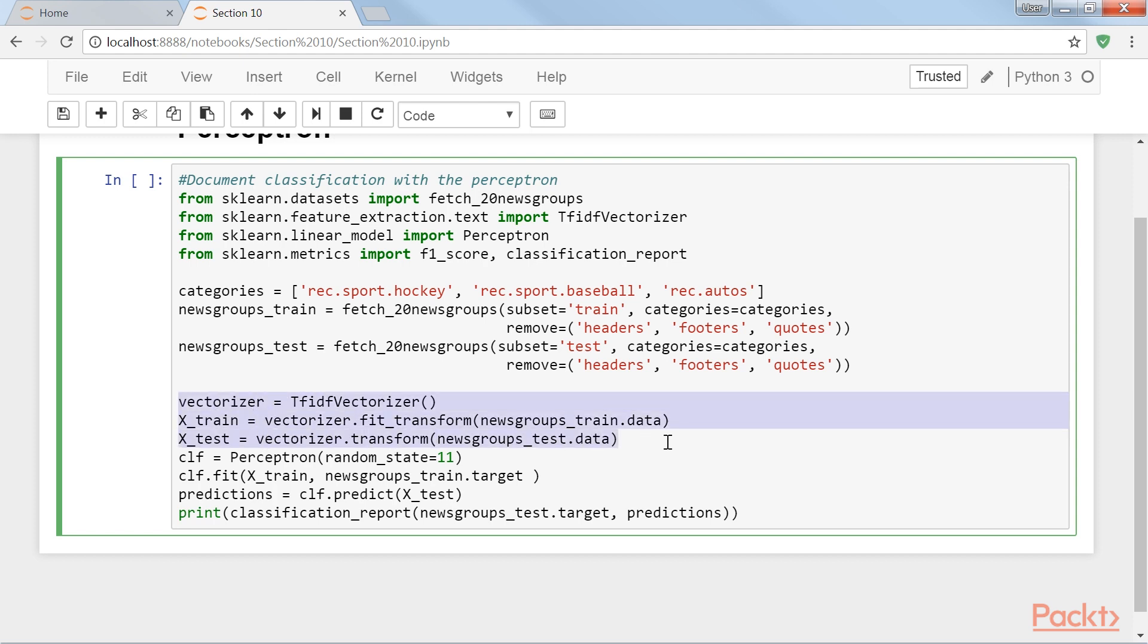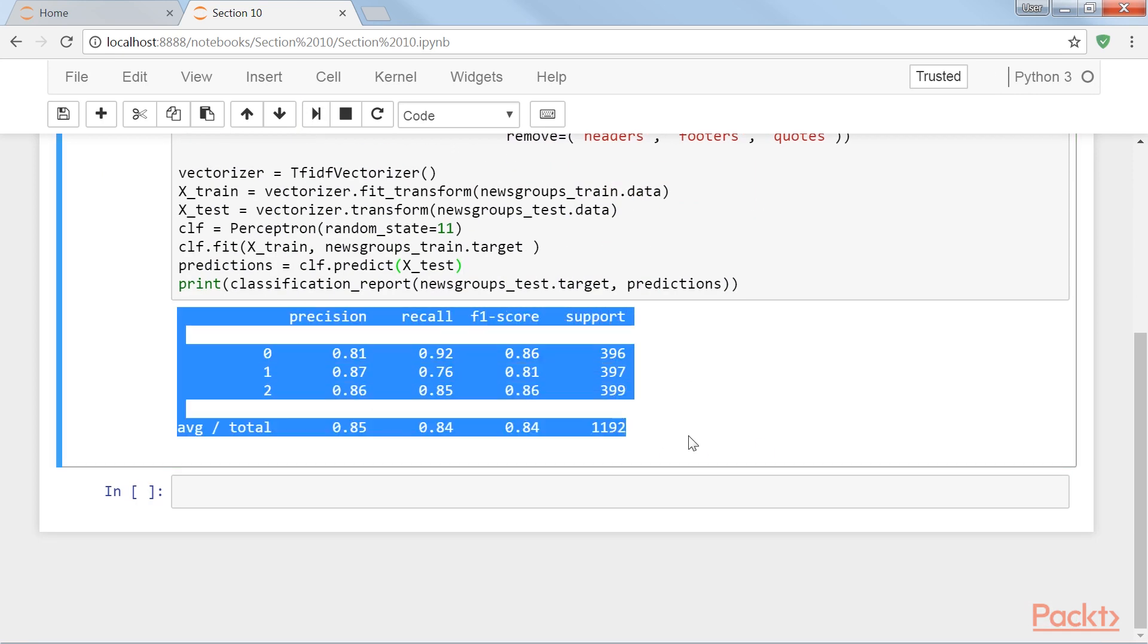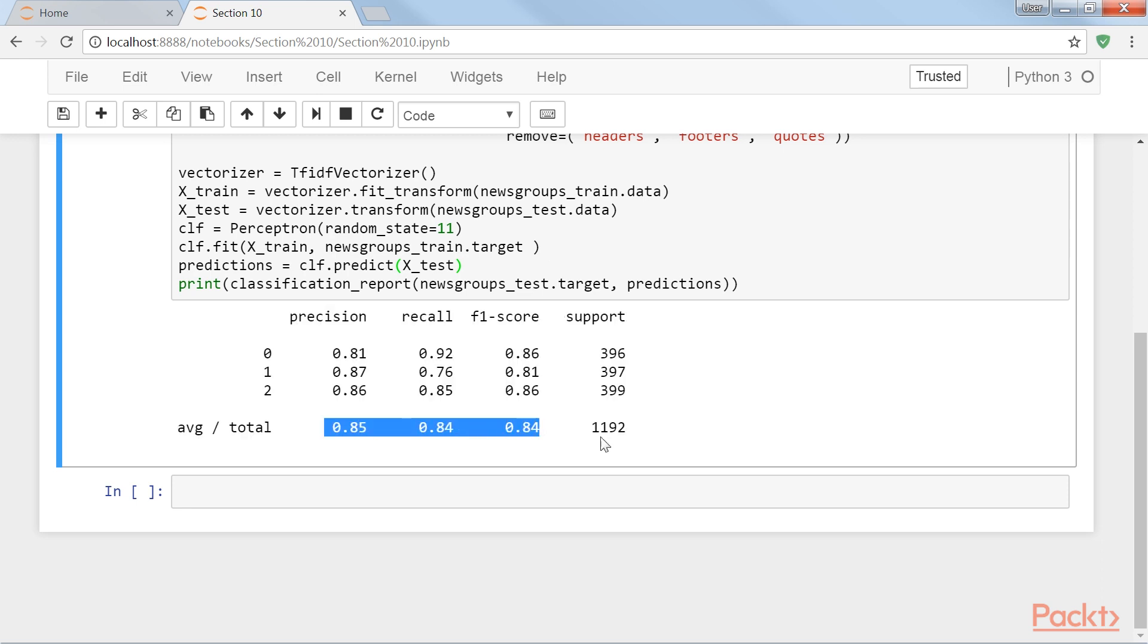We produce TF-IDF vectors using the TF-IDF vectorizer. Train the perceptron and evaluate it on the test set. And then we print the classification report. Run the script now. Without hyperparameter optimisation, the perceptron's average precision, recall and F1 score are 0.84. In this video, we learned a lot about the perceptron.